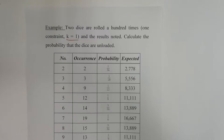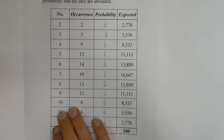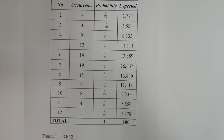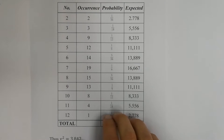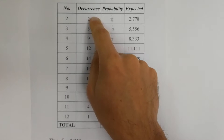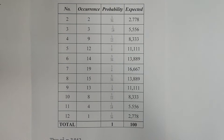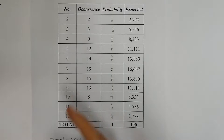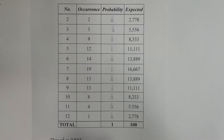Calculate the probability that the dice are unloaded. We have a table showing the number of readings possible with two dice — values from 2 to 12 — and the occurrences that were observed. For example, there were 2 occurrences of rolling a 2, and 19 occurrences of rolling a 7. Numbers in the center occur more often.